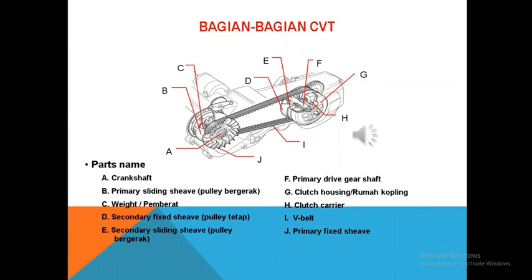Berikutnya adalah komponen-komponen atau bagian-bagian dari CVT. Yang pertama adalah CanSup. CanSup di dalam sistem CVT berfungsi sebagai poros yang meneruskan tenaga dari poros engkol. Yang kedua, Primary Sliding Shaft atau Puli Bergerak berfungsi untuk mengatur kecepatan sepeda motor berdasarkan gaya sentrifugal dari roller.